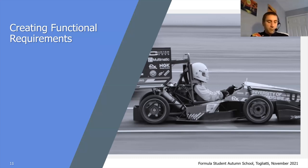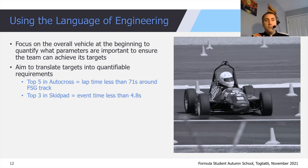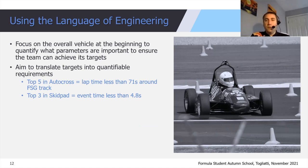Let's move on and talk about functional requirements. Having decided what your team is trying to achieve, how do you turn that into a functional requirement for a vehicle? It's initially important to focus on the overall vehicle and quantify what parameter is important to achieve your targets. If your target is a top-five position in the autocross event, understand what the car needs to do to achieve that — how fast are cars around the autocross track at Formula Student Germany? If you want to be top three in the skid pad, what does that equate to in seconds and lateral G?